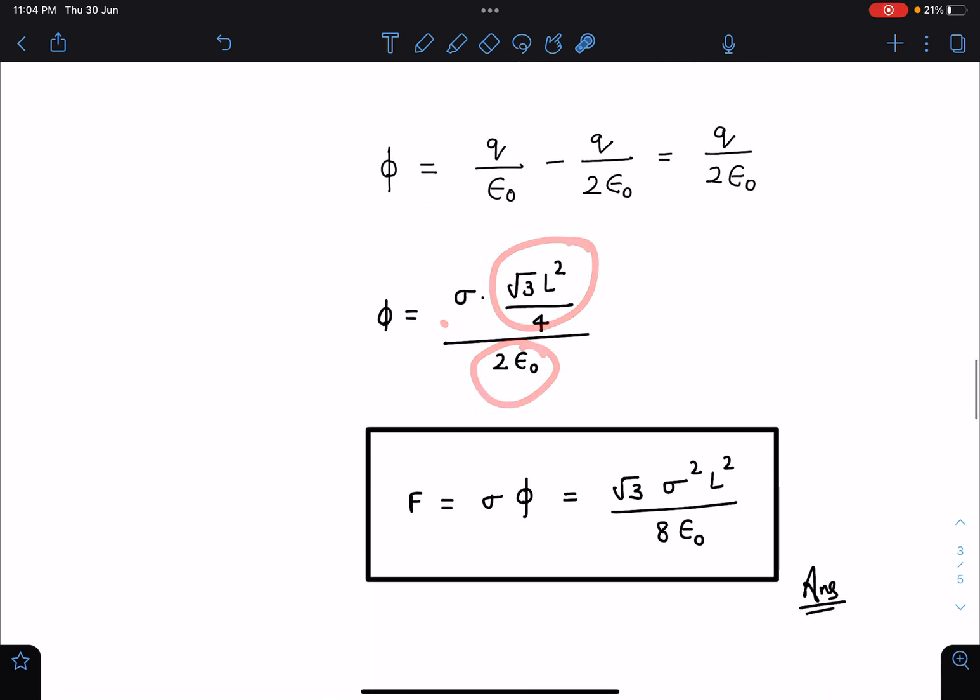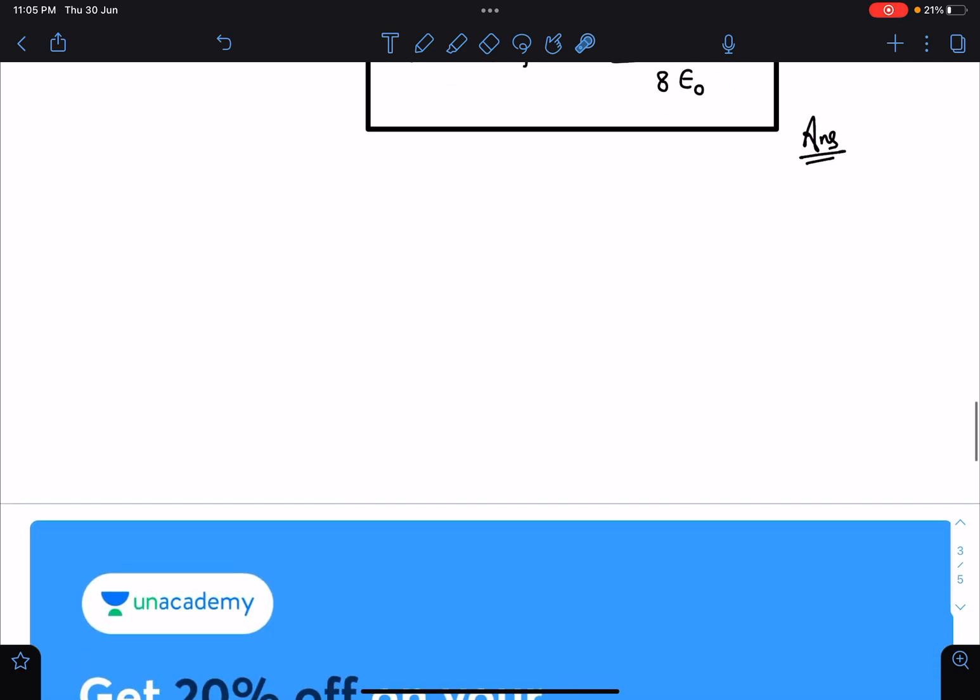So that will become sigma into area of this divided by 2 epsilon naught. And once we know this phi, this force will become sigma phi which is root 3 sigma square L square by 8 epsilon naught. So I hope guys this answer is known to you and the method also is known to you.